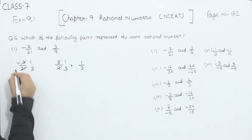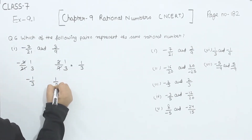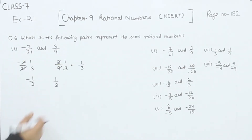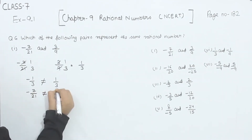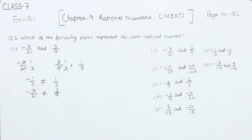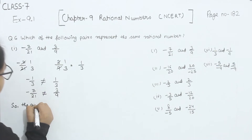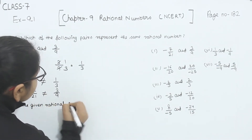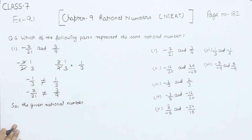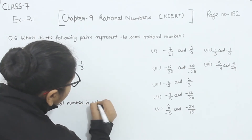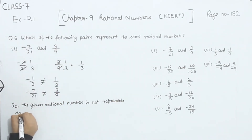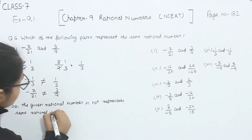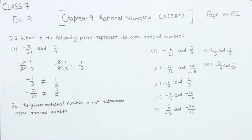For minus 7 by 21: 7 ones are 7, 7 threes are 21, so this simplifies to minus 1 by 3. We have minus 1 by 3 and 1 by 3 — they are not the same, since one is negative and the other is positive. Therefore, the given pair does not represent the same rational number.